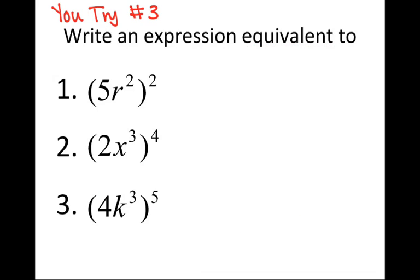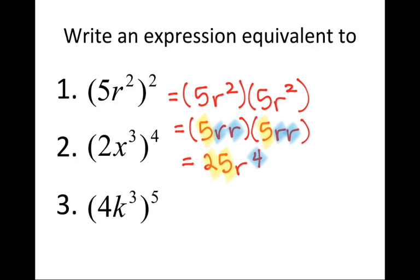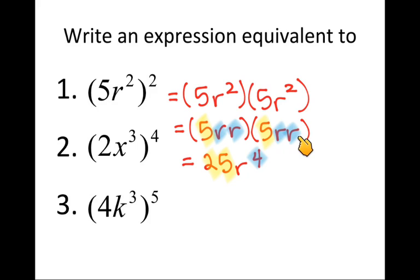Try these three in your journal — this is your final 'you try it' to see how well you're grasping the concept. Ask for help if needed. For the first: 5r squared raised to the 2nd power. The power of 2 gives 5r squared × 5r squared. Expanding: 5 × 5 = 25, and there are 4 r's, so the answer is 25r to the 4th power.